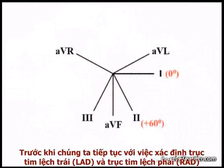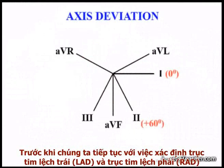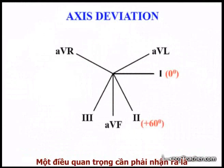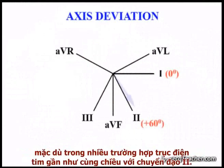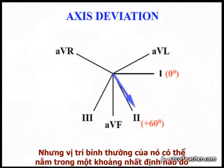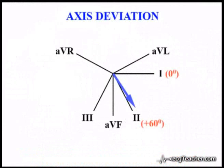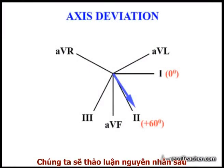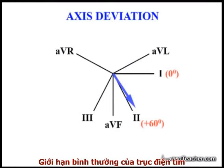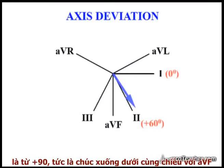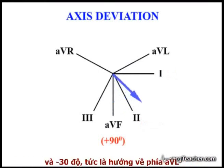Before we move on to the identification of LAD and RAD on the ECG, it is important to realize that although the cardiac axis lies close to lead 2 in many cases, its position demonstrates a wide normal variation. The normal range for the cardiac axis is taken to lie between plus 90 degrees, or straight down AVF, and minus 30 degrees, straight along AVL.